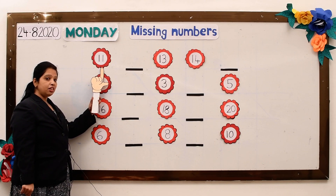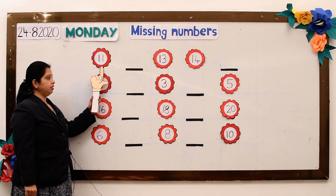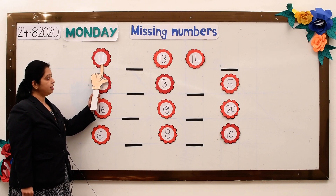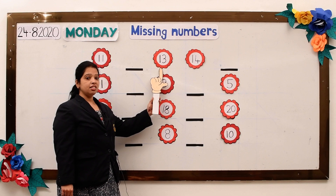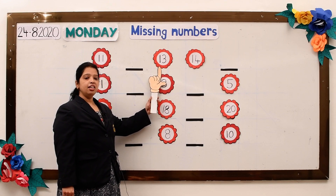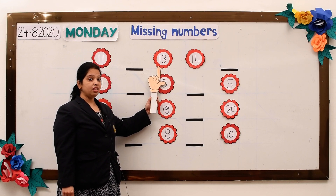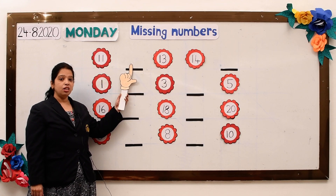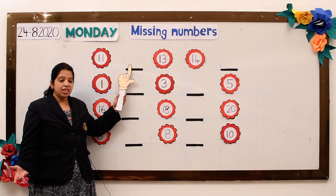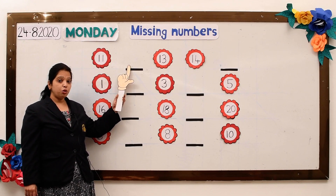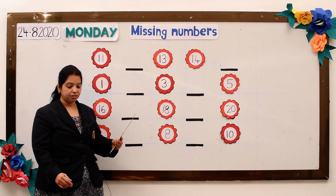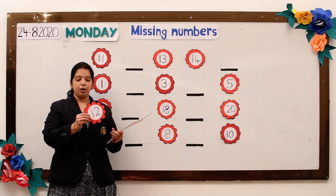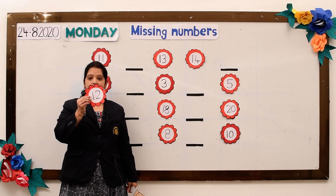Can you see the number 11? Yes, this is number 11. Which number is this? Number 13. So can you guess which number is missing? Yes, number 12 is missing. So let us find out where is number 12. Yay! Here I found the number 12.